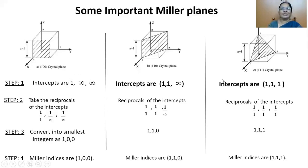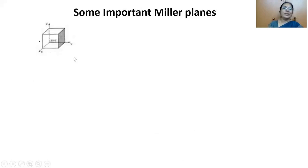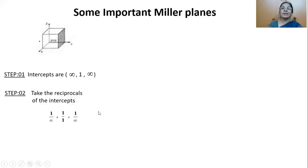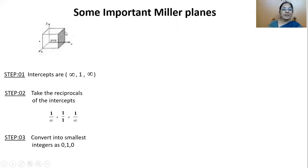Some more examples. This shaded face is intersecting only the Y axis and is parallel to the X axis and Z axis. The intercepts can be written as ∞, 1, and ∞, because the plane is parallel to X and Z axes. Finding the reciprocal of the intercepts and reducing to smallest numbers gives 0, 1, 0. So the Miller Indices for this plane can be written as the (0 1 0) plane.